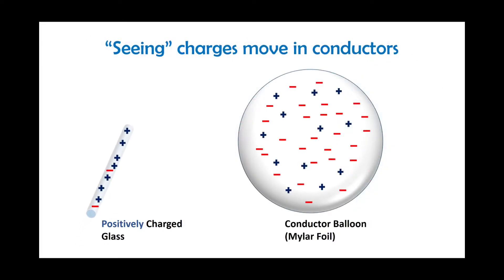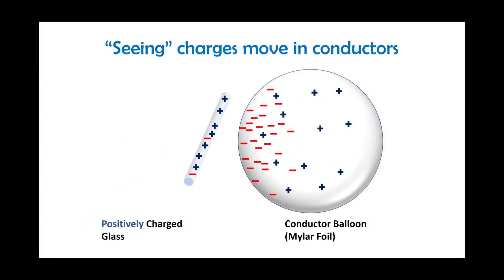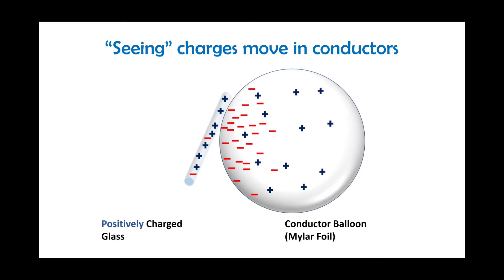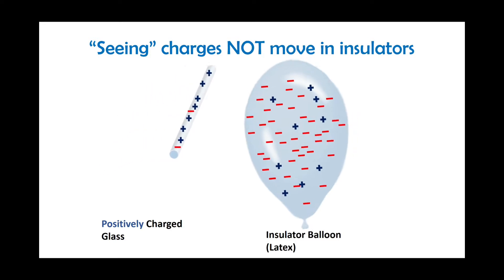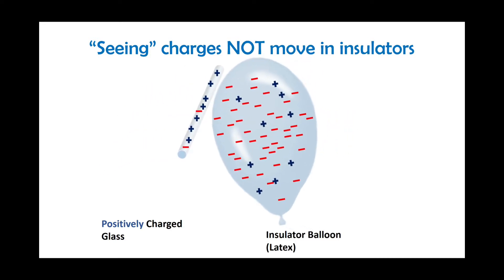When we had the positively charged glass and brought it towards the conductor balloon, again these electrons can move freely, so they were brought closer to the charged glass or acrylic and were attracted to it. When we took the positively charged glass and moved it towards the insulator balloon, those electrons cannot move in an insulator, and they are attracted to the positively charged rod.